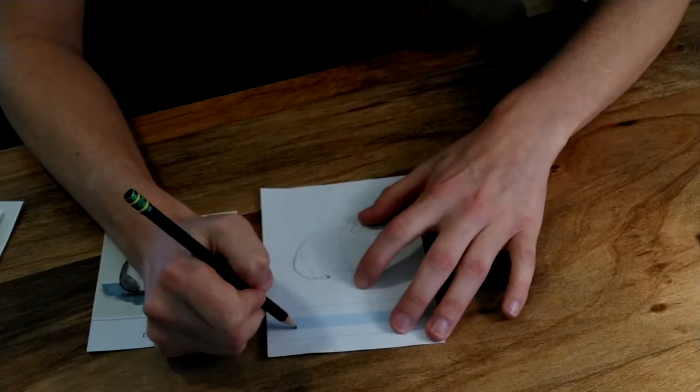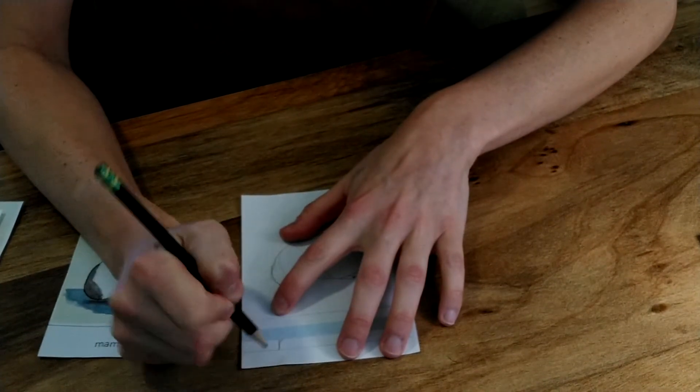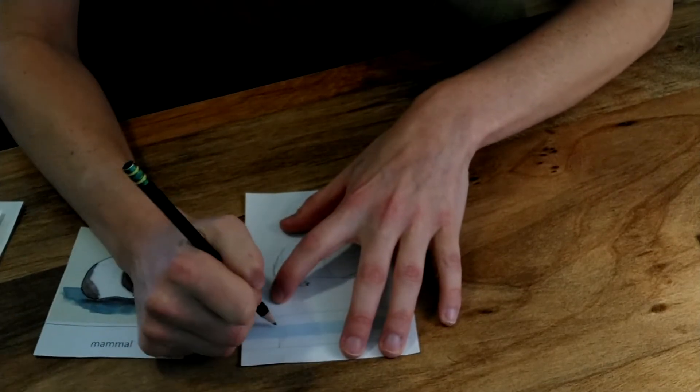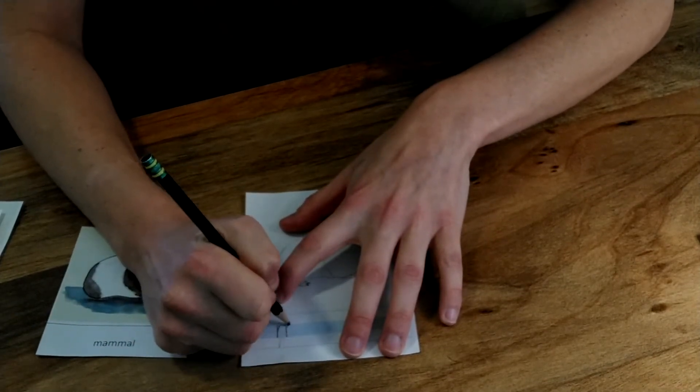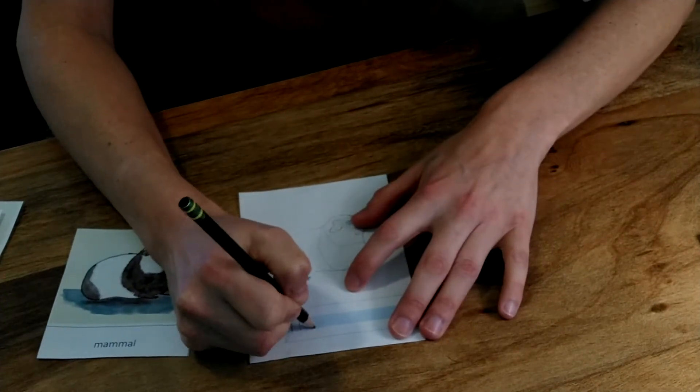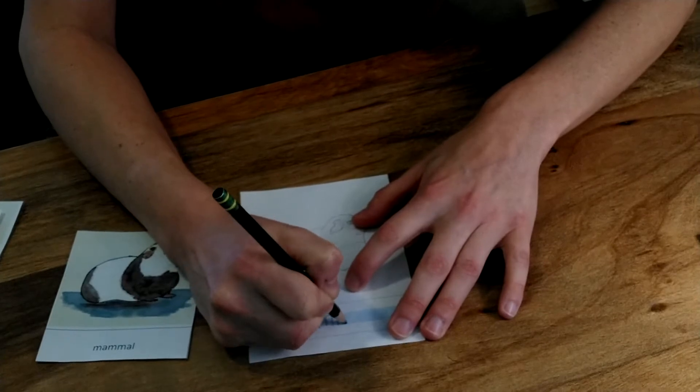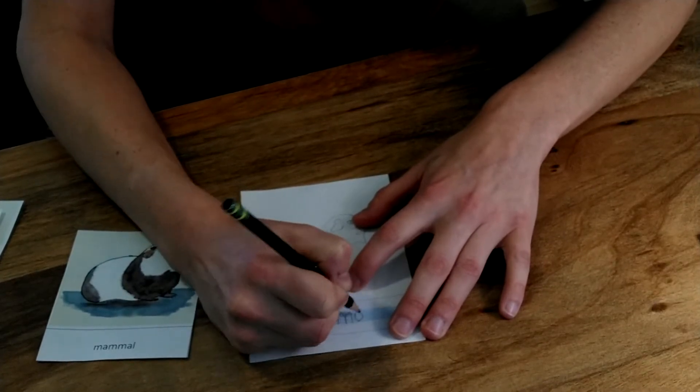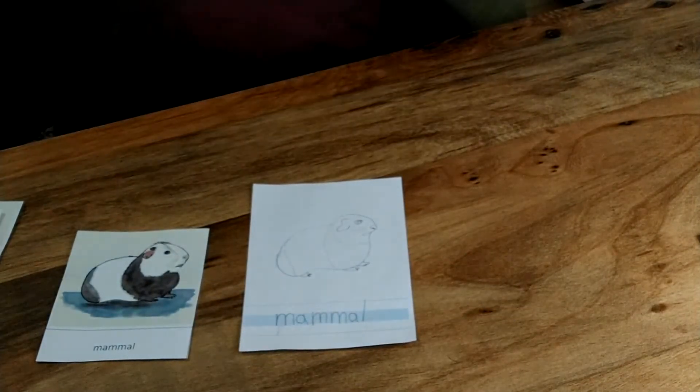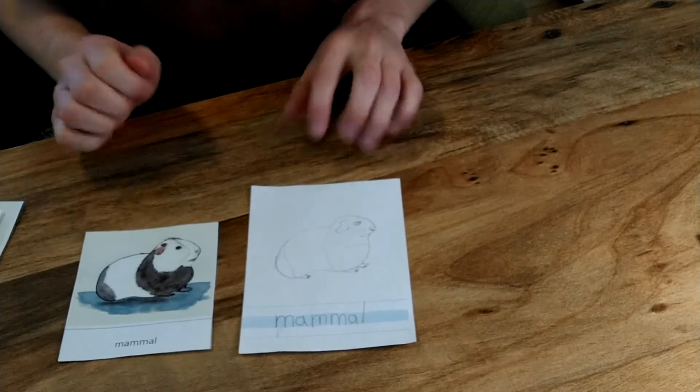So I am going to write mammal. All of my small letters will be kept in the blue part of the paper. Mammal. And then I can add color with my colored pencils or paint.